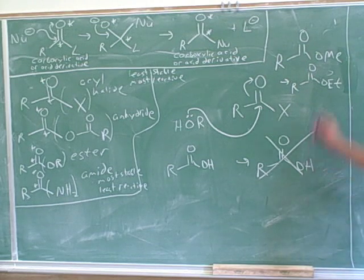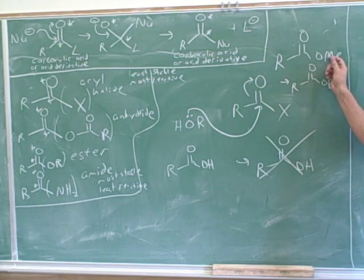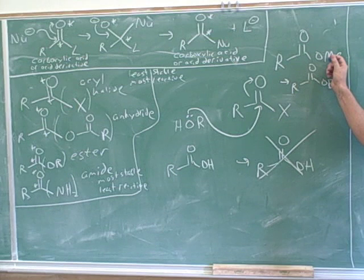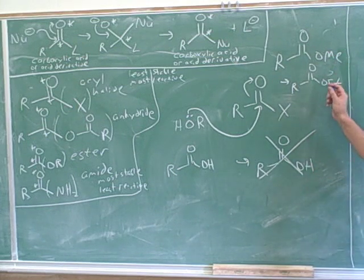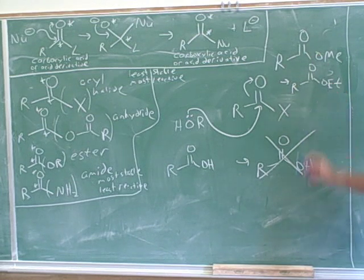And by the way, what would the other product be? Methanol, because this leaving group is going to leave. When this leaving group leaves, it's going to gain a proton, and when the nucleophile attacks, it's going to lose a proton. So you would attack this with ethanol to make this ester.